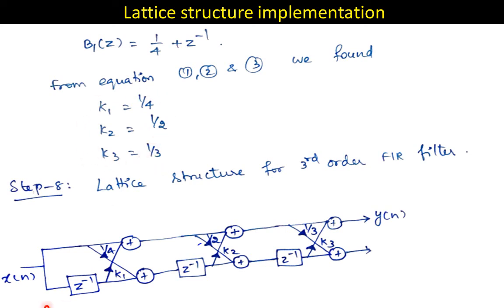With k1 = 1/4, k2 = 1/2, and k3 = 1/3 calculated, draw the lattice structure for the third order filter: three cascaded first order sections connected back to back, with three delay elements in the bottom line, two summers at each section end, and crisscross multipliers marked k1, k2, k3 sequentially. The input is x(n) and output is y(n). This completes the lattice structure implementation for first, second, and third order FIR filters. Thank you.